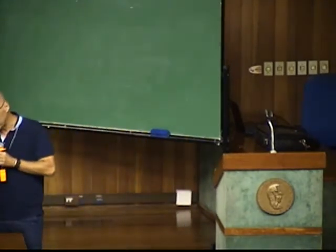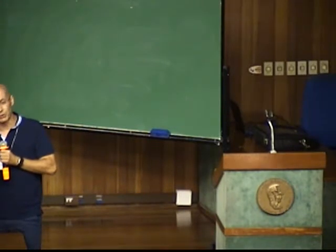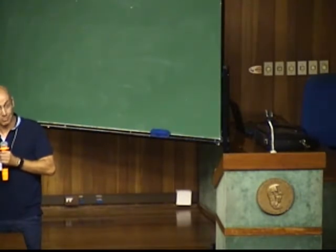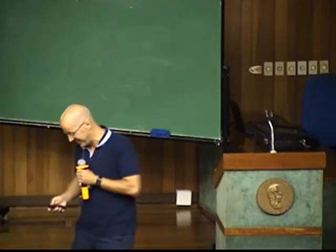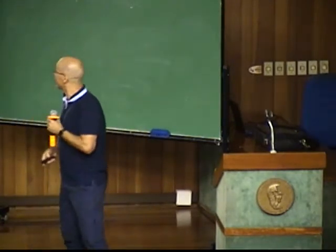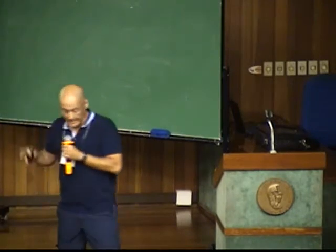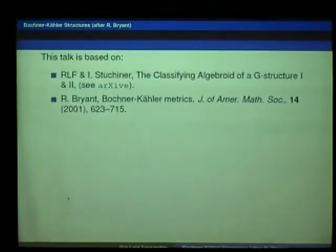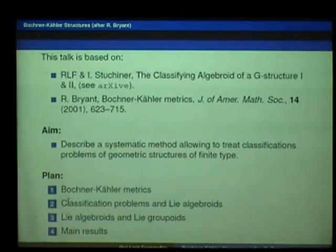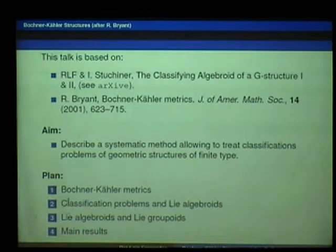My job is a little bit complicated, because imagine that you've never heard about what is a Lie group or a Lie algebra, and you wanted to tell people about what is a Lie group and Lie algebra and some results and applications. I'm in a similar situation. This is based on some joint work with Ivan Struchiner, who is from USP here, and it builds on this paper of Bryant where he classifies, in some sense, Bochner-Kähler metrics. There will be kind of four parts in this talk: recalling what a Bochner-Kähler metric is, slowly building into the classifications, explaining how extended Lie theory enters the picture, and coming back to classification issues.